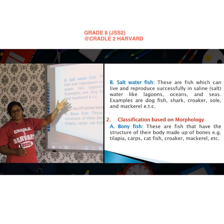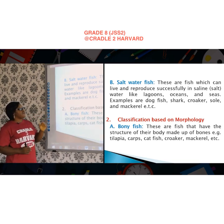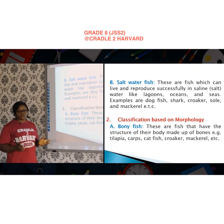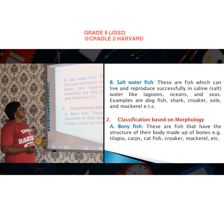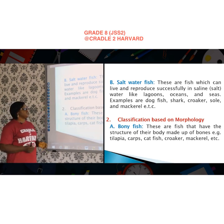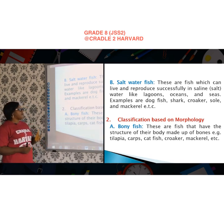The second classification based on habitat is saltwater fish. These are fish that can live and reproduce successfully in saline water, that is salt water, like the lagoons, oceans, and seas. Examples of saltwater fish are dogfish, shark, croaker, and mackerel.